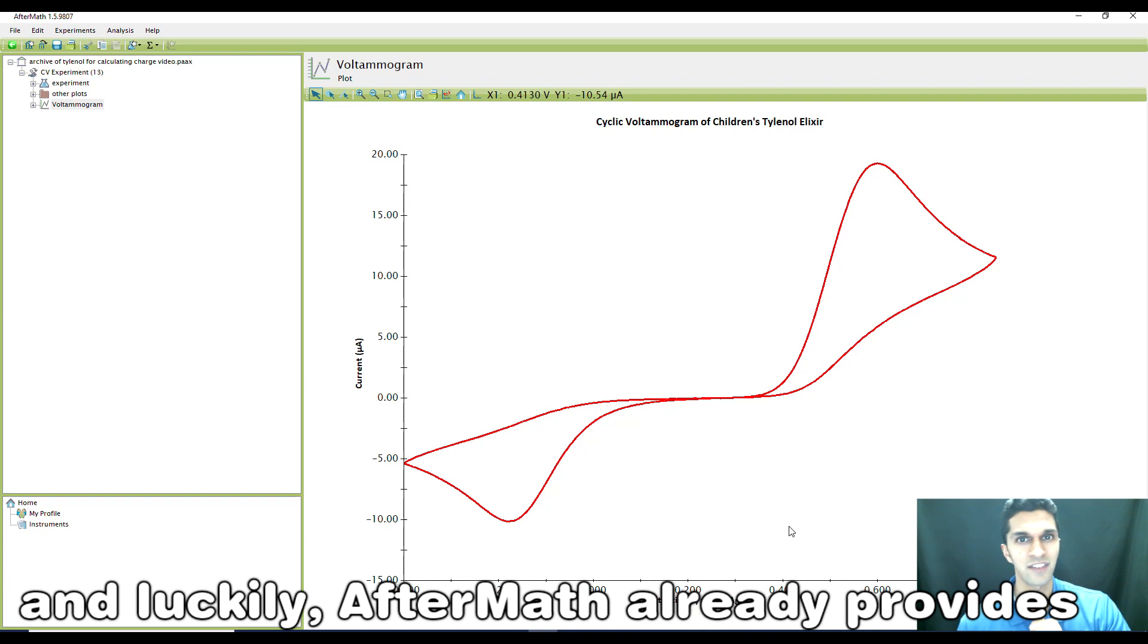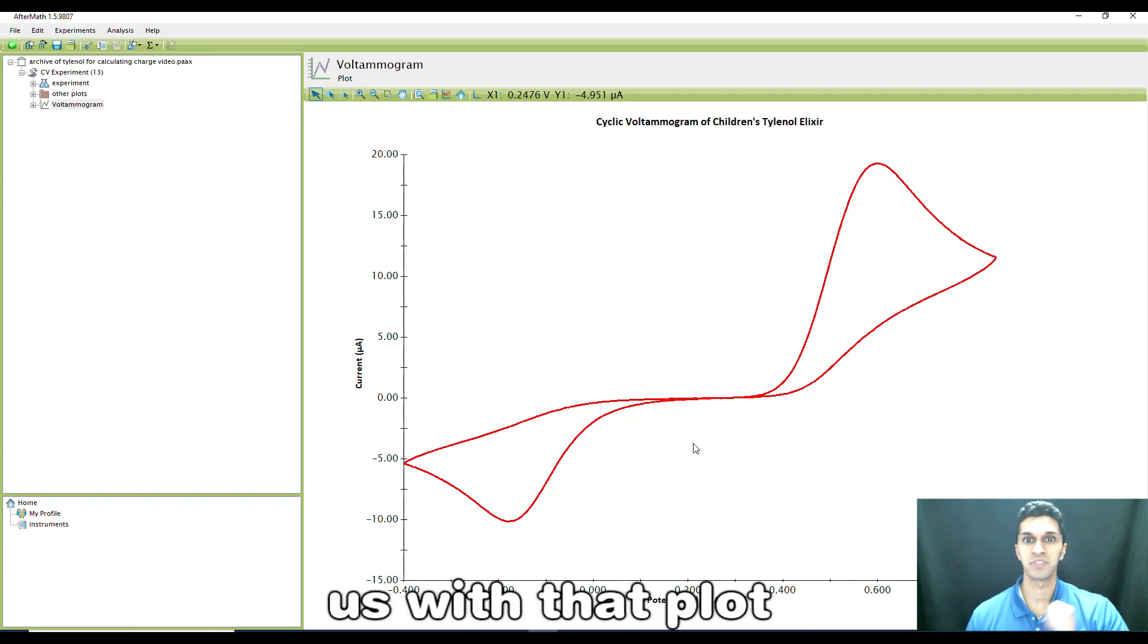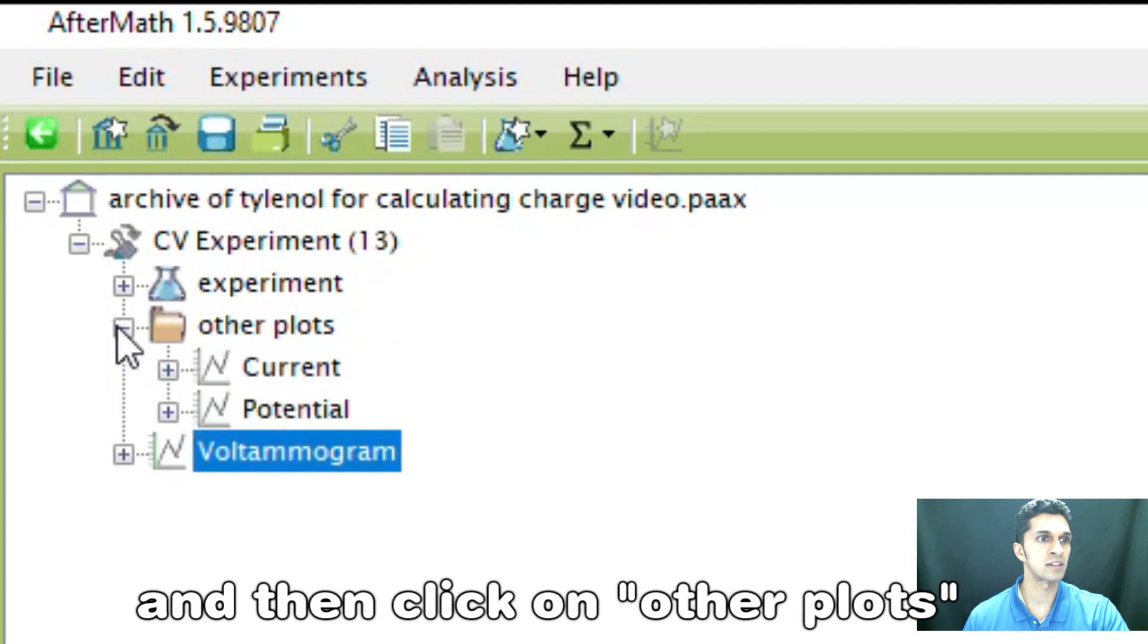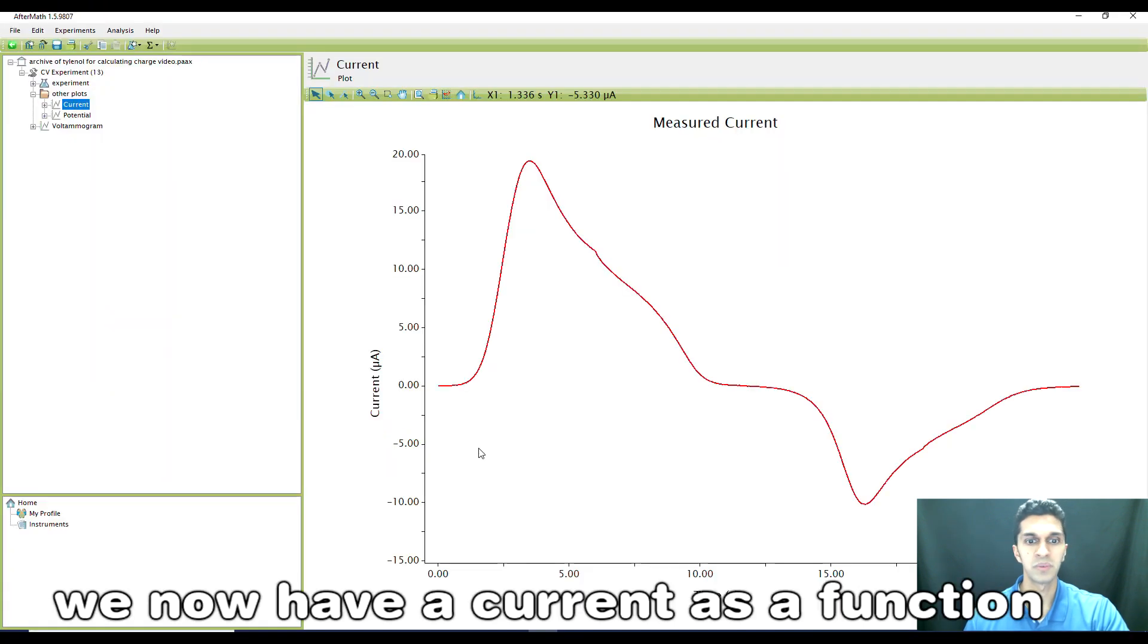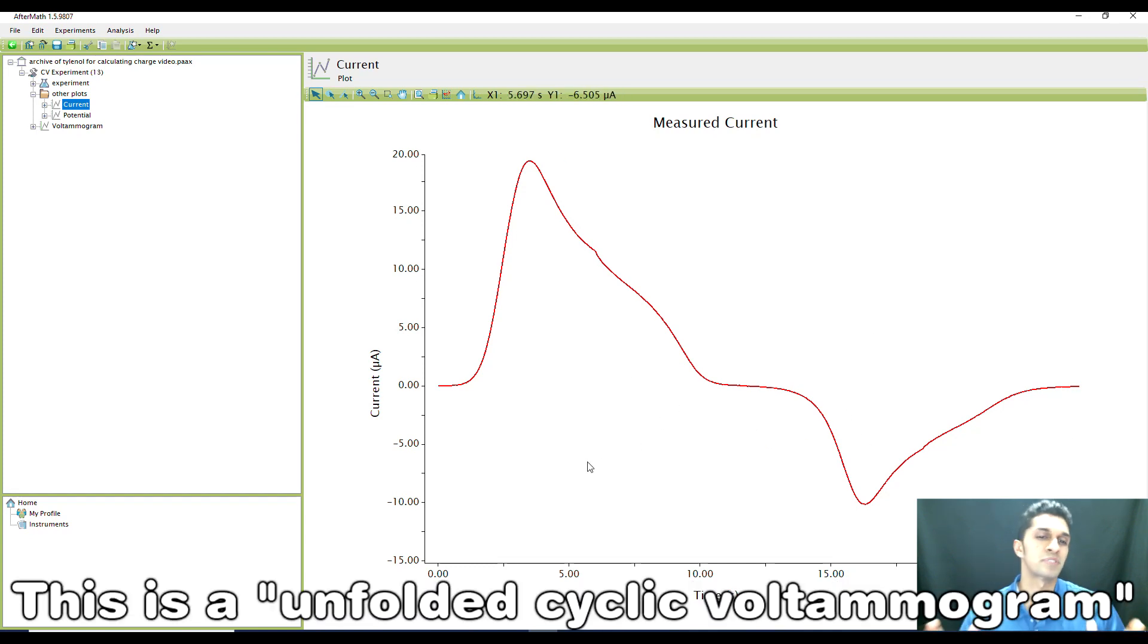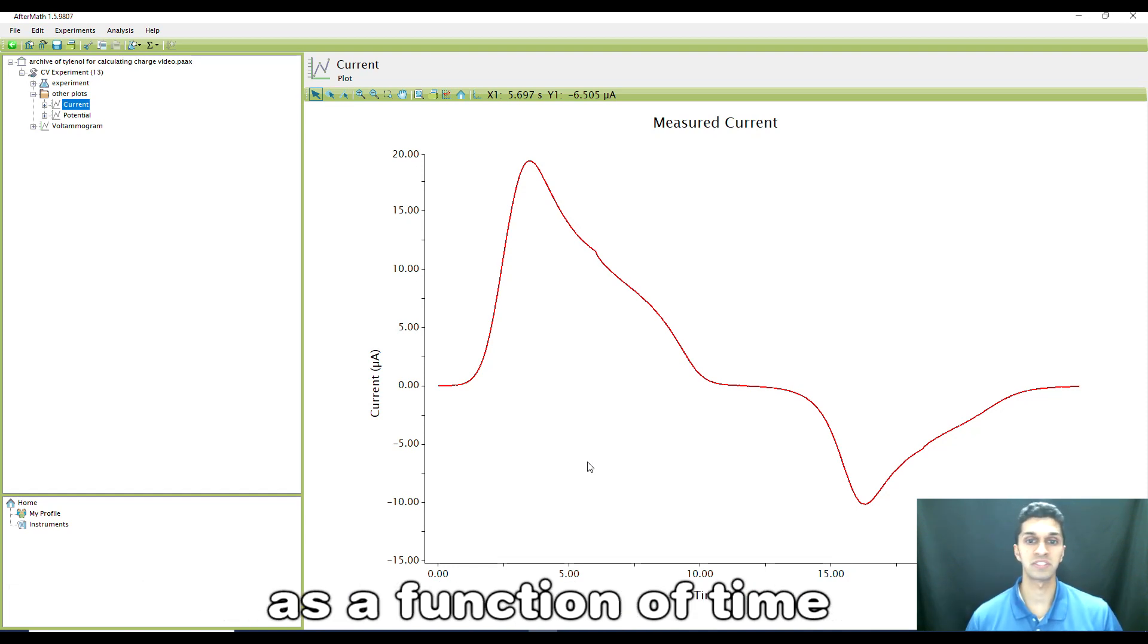Luckily, Aftermath already provides us with that plot. If you go into the experiment node and then click on other plots, click on current, we now have a current as a function of time plot. This is sometimes called an unfolded cyclic voltammogram where we look at the current as a function of time.